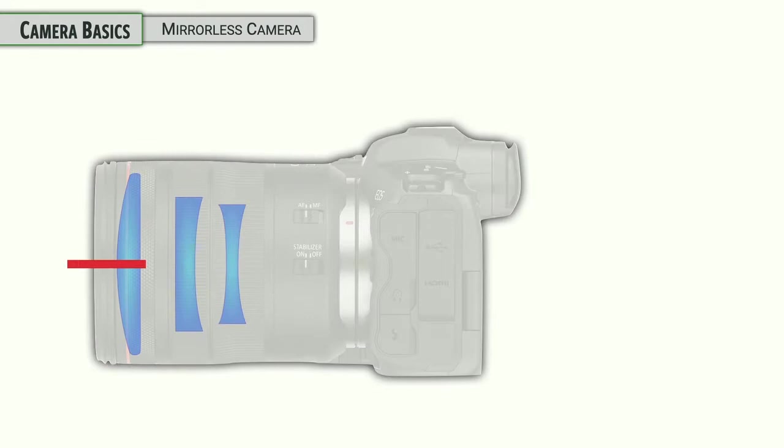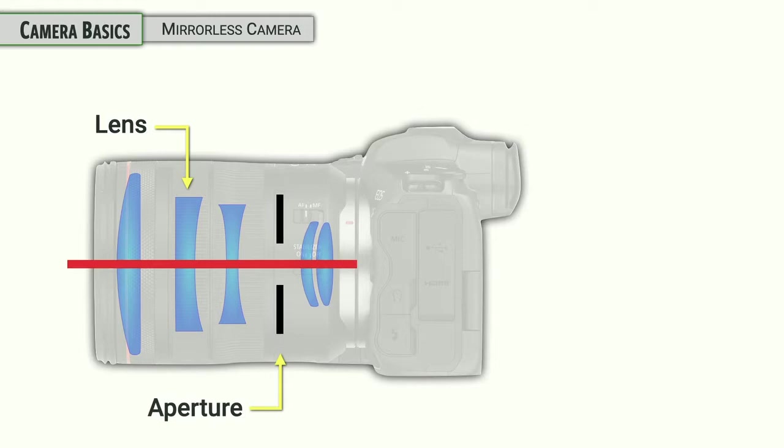So this is a mirrorless camera. We've been working with these cameras for a number of years now. We have interchangeable lenses. Each of these lenses has an aperture in it that can control the light. It's our first way of controlling the light.